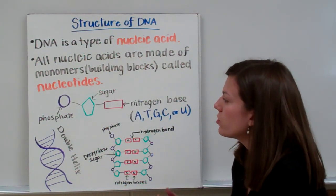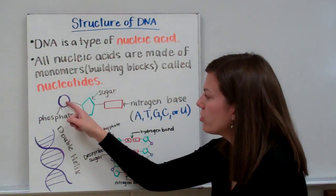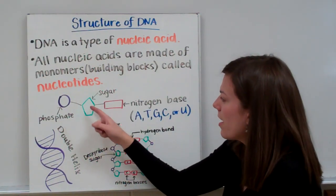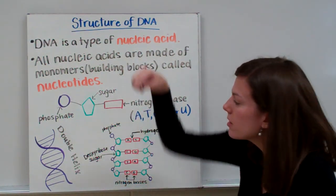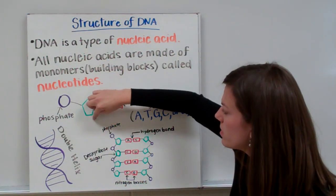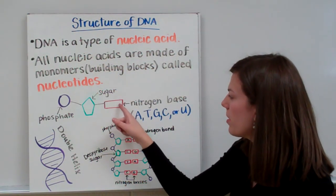But you need to know the actual names of these structures. The round structure is a phosphate and the pentagon is a five carbon sugar. We say it's five carbons because each point represents a carbon. And then right here we have nitrogen bases.